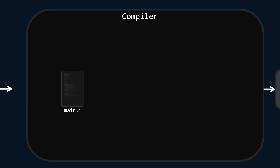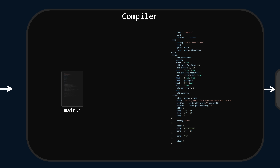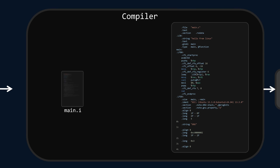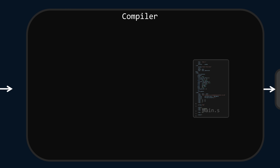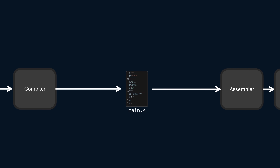Next comes compilation, but not directly into machine code. Instead, the preprocessed code is translated into assembly language — the instructions that the computer will execute, but still in a human-readable form. So here's our first myth busted: a compiler doesn't always convert source code into machine code. In fact, many compilers convert source code into an intermediate representation, like assembly, or even into another programming language.